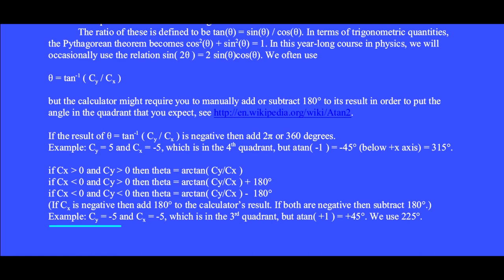As another example, if c_y = -5 and c_x = -5, which is in the third quadrant, but arctan(+1) = +45°, so we adjust the result and use 225°.